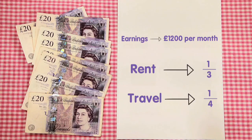Firstly, you need to concentrate on the important facts. Molly's earnings are £1,200 per month. She spent a third of her earnings on rent and a quarter of her earnings on travel. We need to find out how much is being spent on rent and travel.